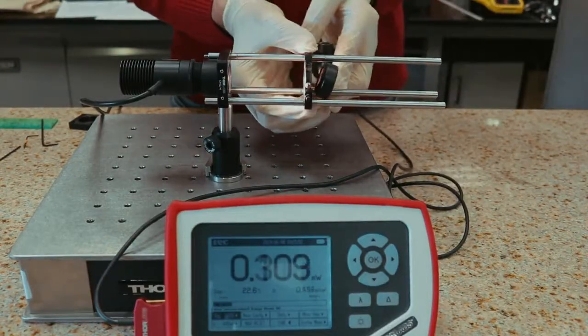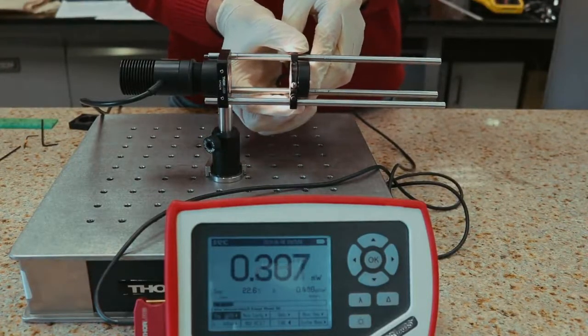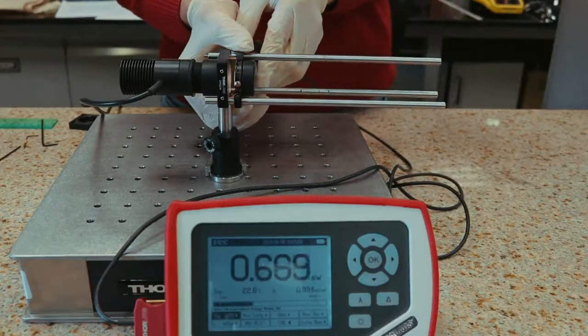With the help of a photodiode power sensor placed on the other side of the aperture, move the iris to the position of maximum intensity.